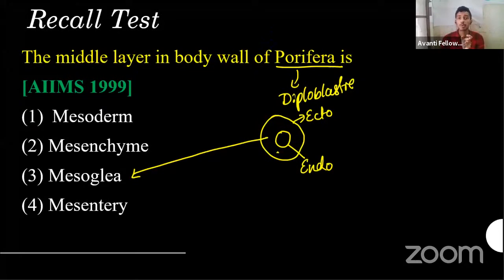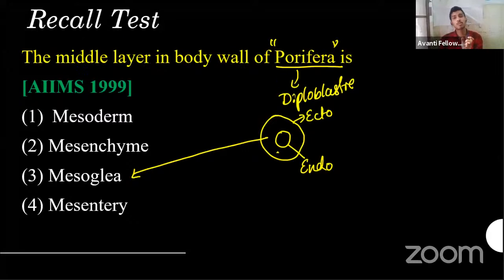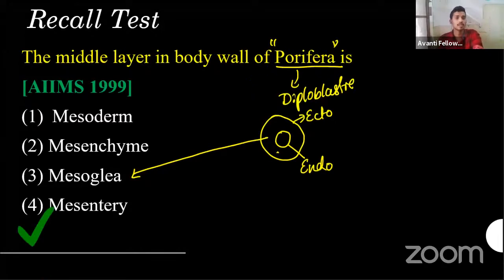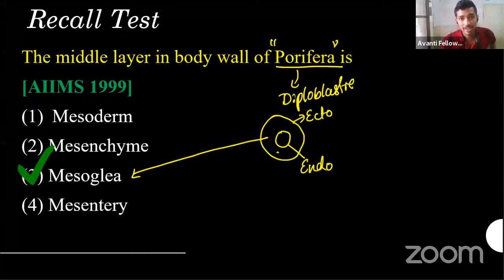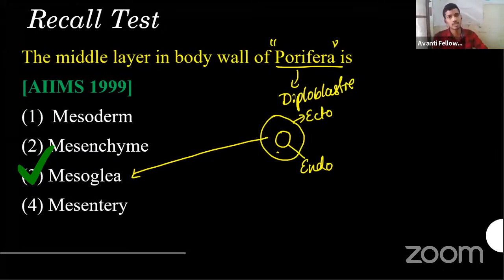You concentrated on the least important things and left the most important point — that it is Porifera. The correct answer is mesoglia. It does not have any real function; it's a developmental stage. Development is actually its function — later on, those cells will give rise to other things.